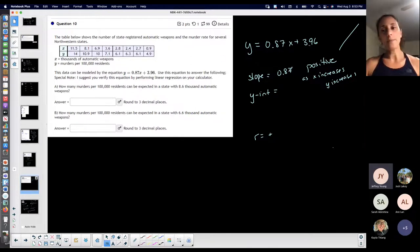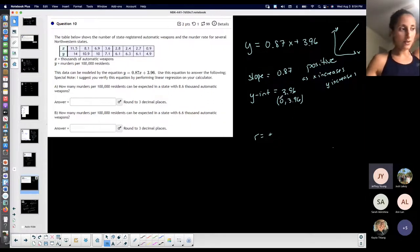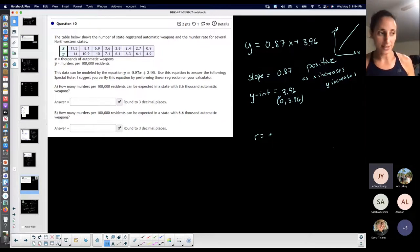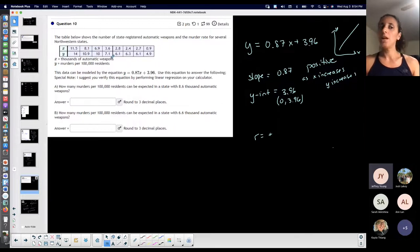My y-intercept is 3.96. When you have a y-intercept, your x coordinate is zero and your y coordinate is that. Anytime you're talking about a y-intercept, it is a point on the y-axis, which means the x coordinate is zero. Some of these problems ask you to interpret your y-intercept and slope. Your y-intercept is always the initial starting point. When x is zero, when there are zero thousands of automatic weapons, we would expect 3.96 murders per 100,000 residents. This is just me talking about what I see.